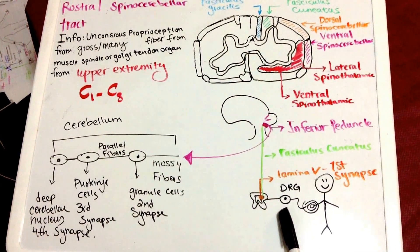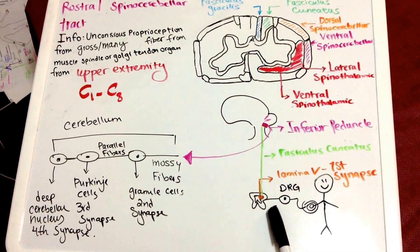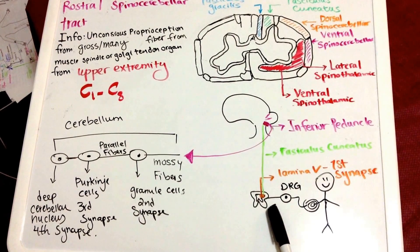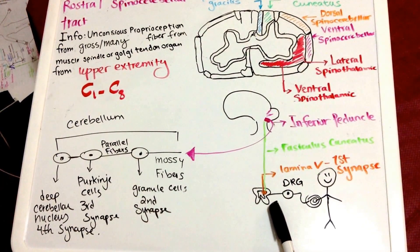The neurons over here are pseudounipolar, so the information is taken to the spinal cord and you will have your first synapse in lamina V.